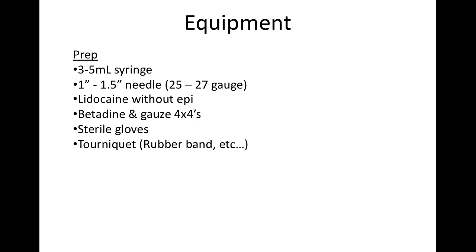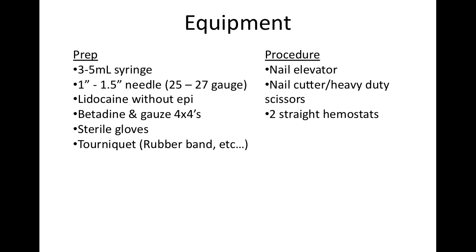For your equipment, you need to prep and do the nerve block first. You'll need a 3ml to 5ml syringe with lidocaine without epinephrine, and a needle that's at least an inch long — preferably 27 gauge, though 25 gauge works too. You'll also need betadine gauze swabs, sterile gloves, and a tourniquet, which can be anything from a formal tourniquet to a rubber band, a glove finger, or a Penrose drain. For the procedure itself, you'll need a nail elevator and a nail cutter or heavy-duty scissors, plus at least two hemostats.